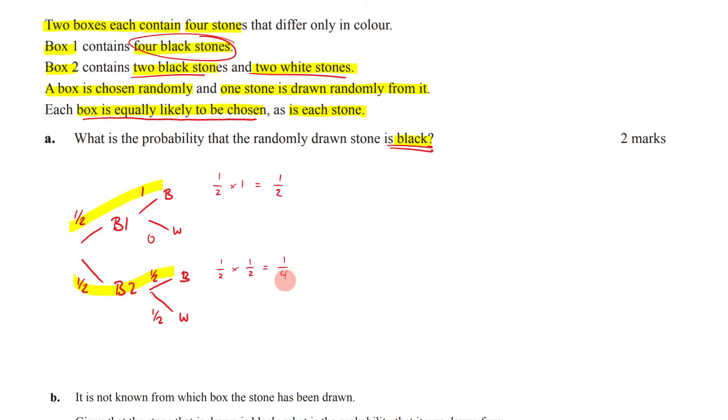And a half times a half is one on four. And then, once you've done that, you simply go, therefore, a half plus one on four is going to be three quarters. And that's going to be your answer.